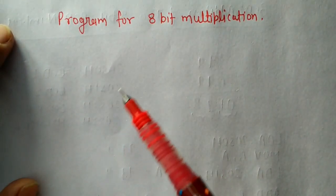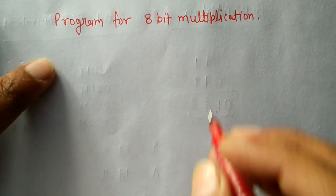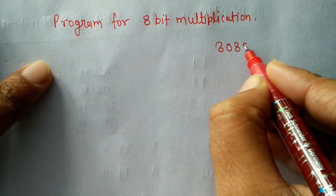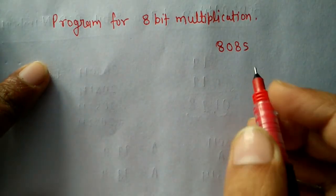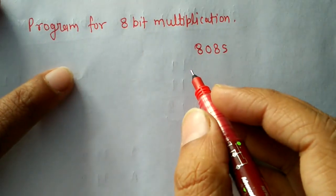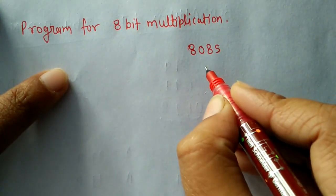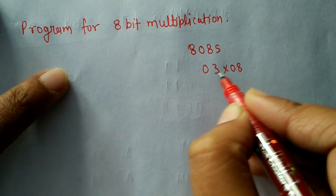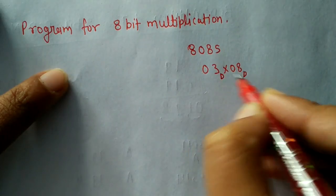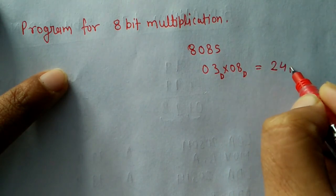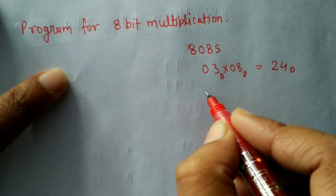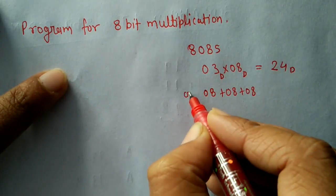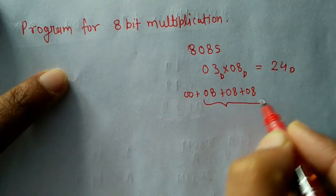Today we are going to write a program for 8-bit multiplication. In the 8085 microprocessor, we do not have any instruction for multiplication, so we can't implement it directly. To achieve multiplication, if we are asked to perform 3 into 8 in decimal, we get 24. We can also get this value by adding 08 three times — that is, adding 08 repeatedly.